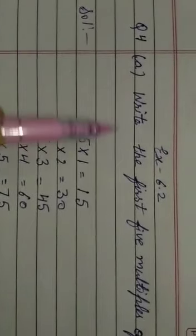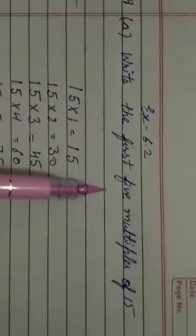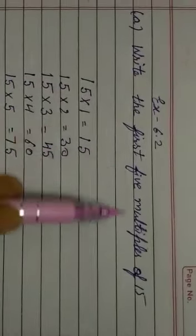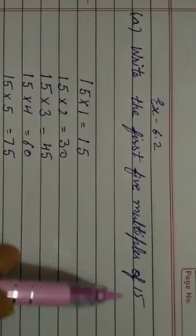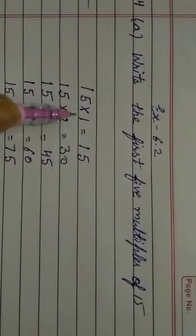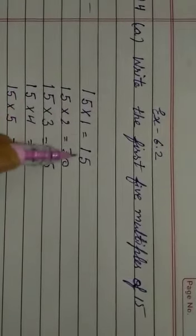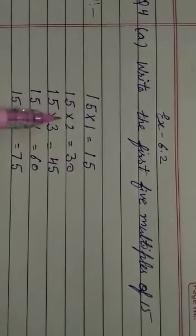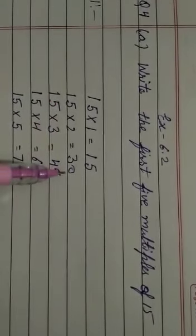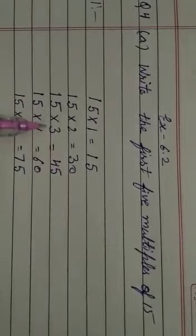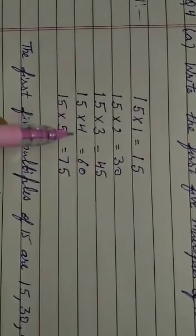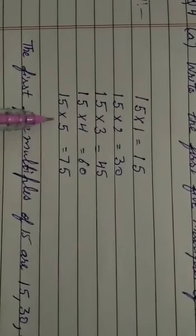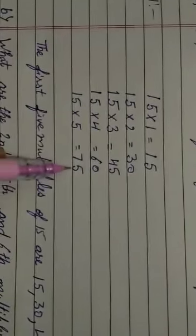Question 4: Write down the first 5 multiples of 15. 15 multiplied by 1 is 15. 15 multiplied by 2 is 30. 15 multiplied by 3 is 45. 15 multiplied by 4 is 60. 15 multiplied by 5 is 75.